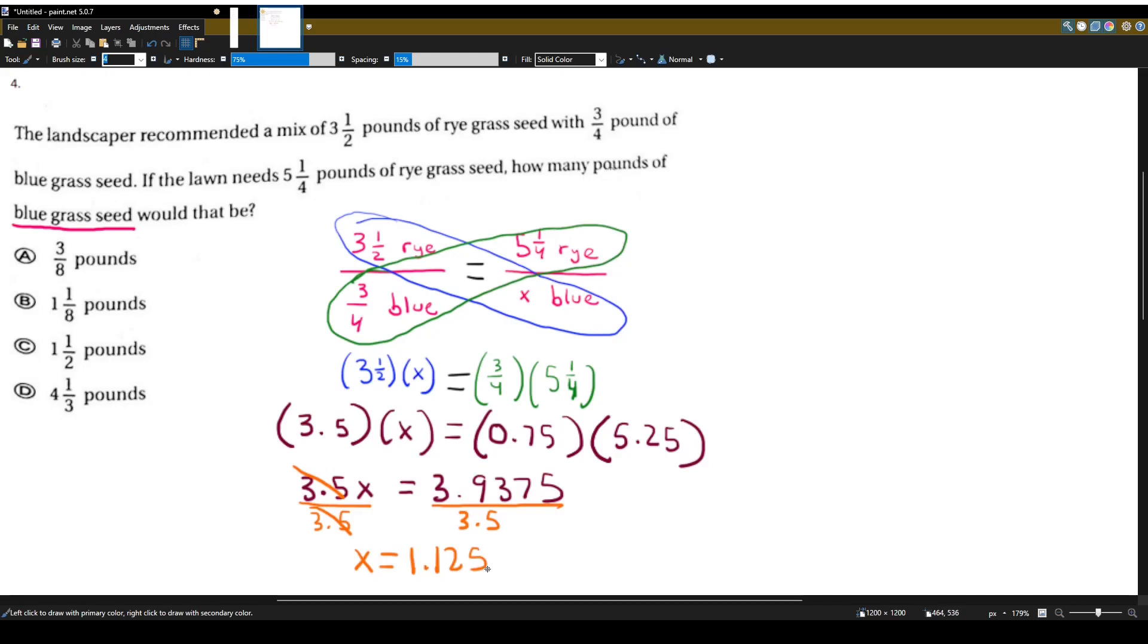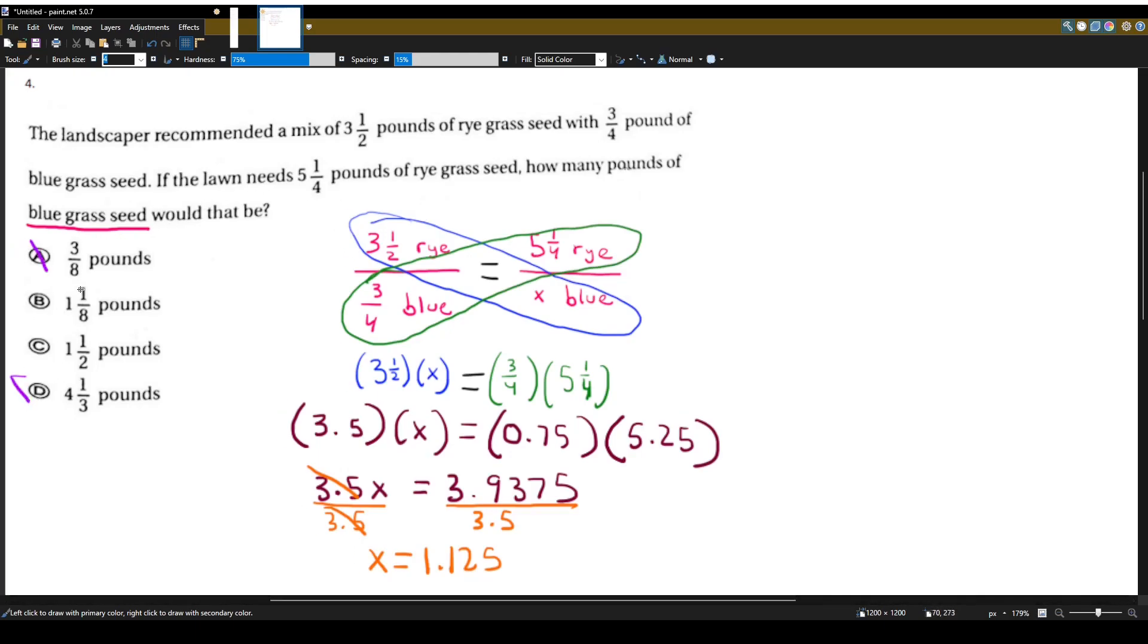So our answer is 1.125. But our problem is our answer choices are in fractions. So let's try to figure out what our answer choice is. Well, it's 1.125, which means it's one and something. So we can eliminate answer choice A and D. And let's look at answer choice C real quick. Answer choice C is 1 and 1 half, right? We know 1 half is just 0.5, so this would be 1.5.